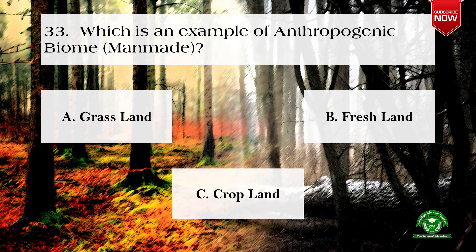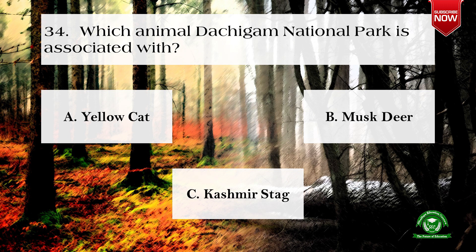Next question: where was the UN Conference on Climate Change COP 21 held? Options are: London, Berlin, and Paris. The correct option is c) Paris. Next question: which is an example of an anthropogenic biome, that is man-made? Options are: grassland, freshland, and cropland. The correct option is c) cropland. Next question: which animal is Dachigam National Park associated with? Options are: yellow cat, musk deer, and Kashmir stag. The right option is c) Kashmir stag.